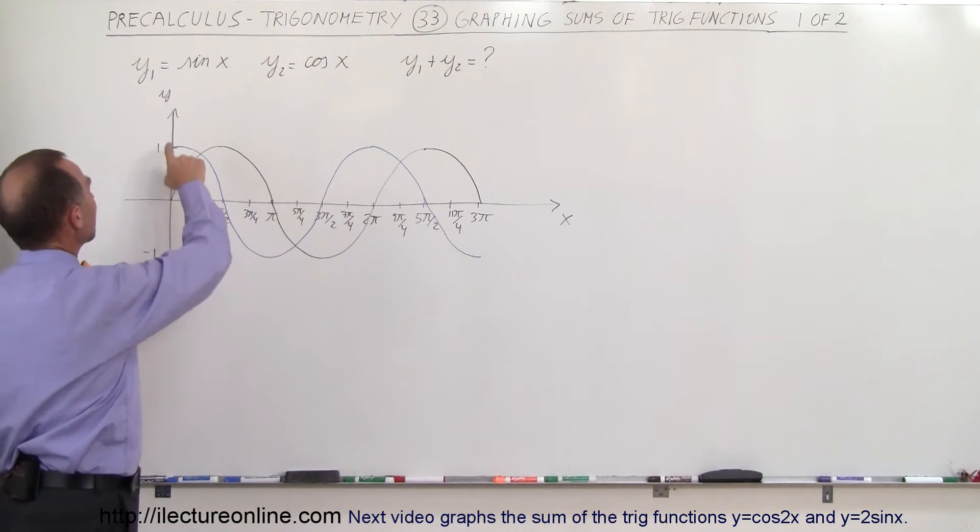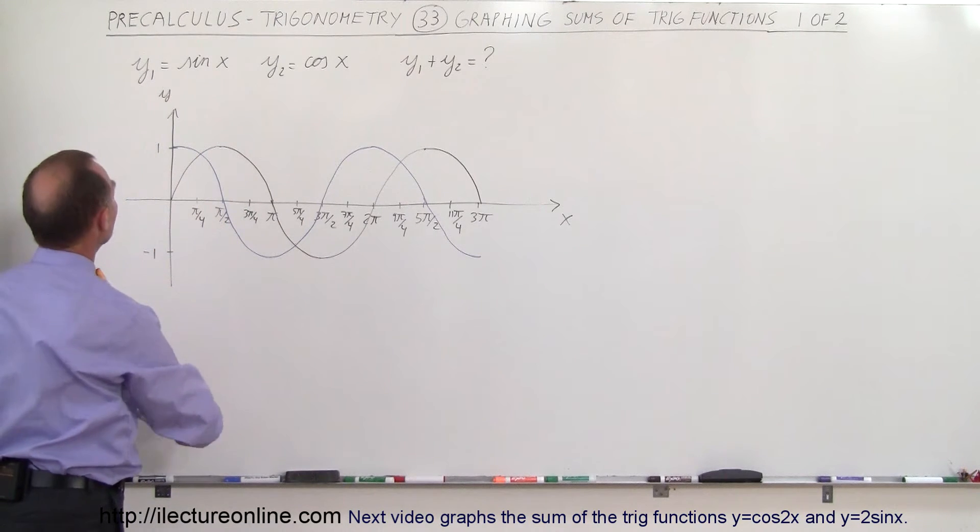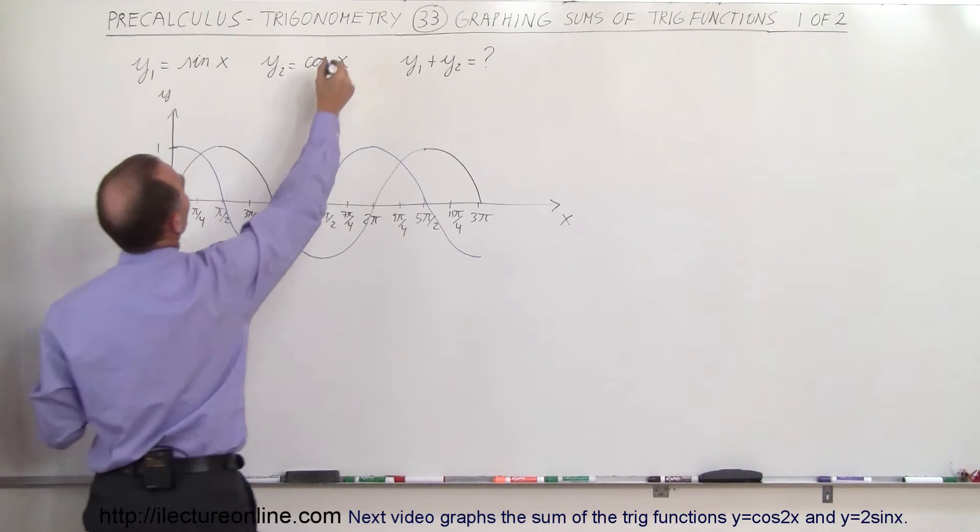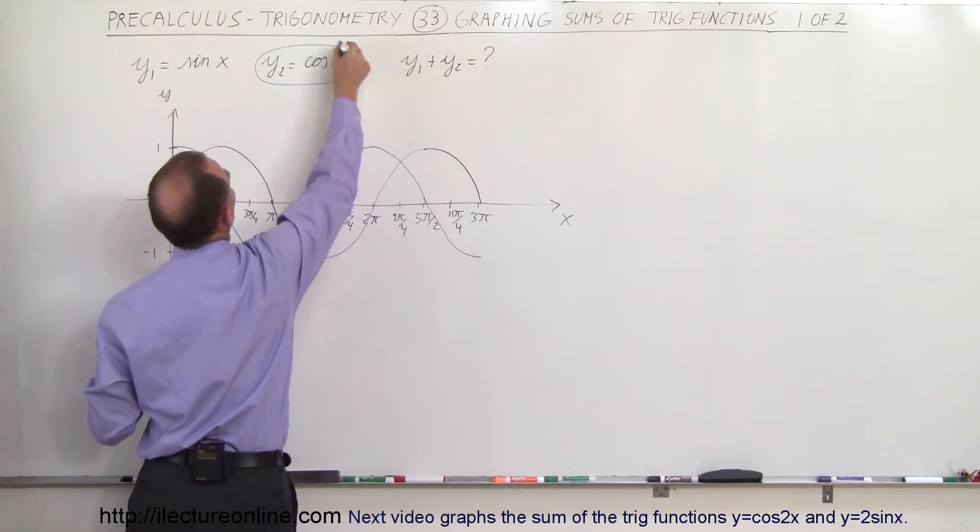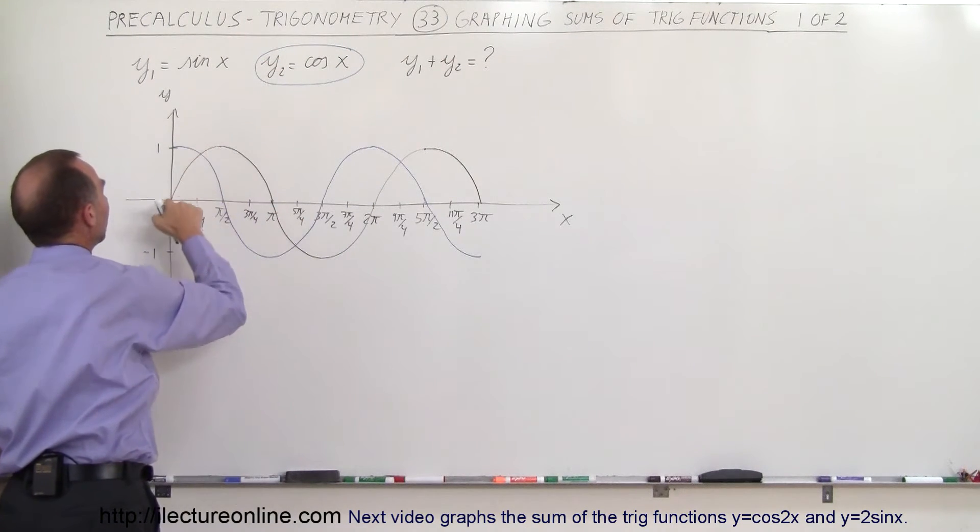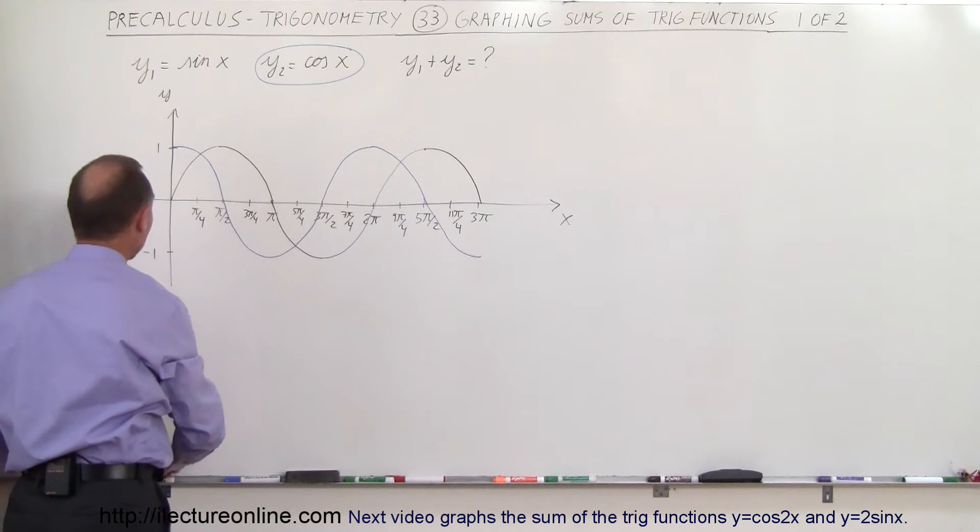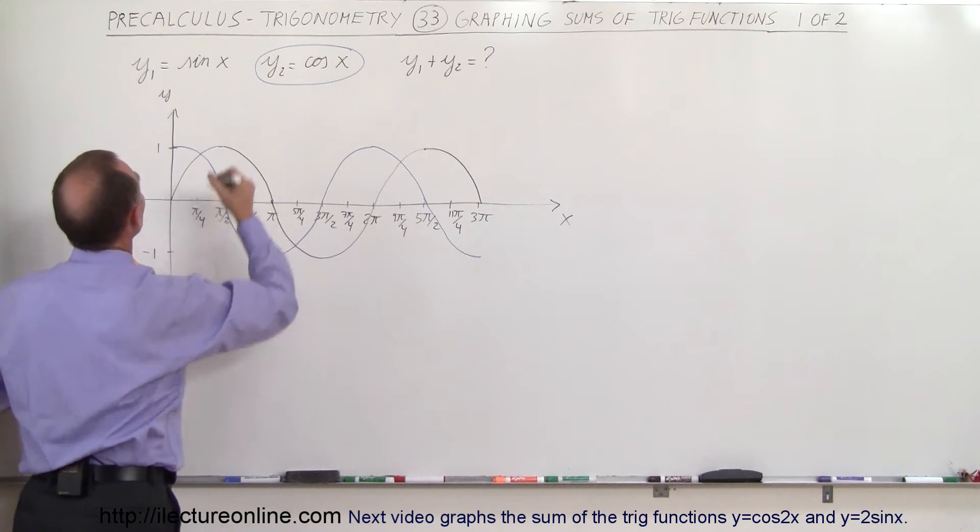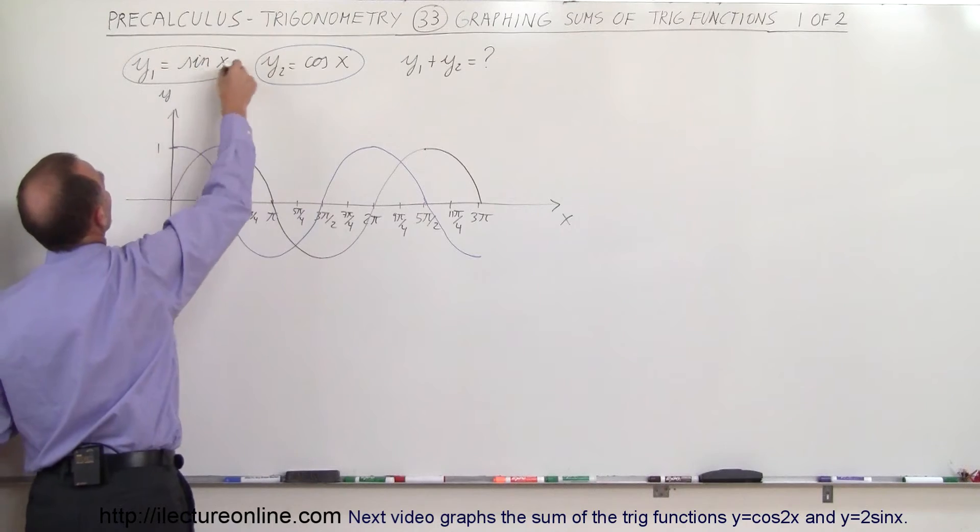And so now we have the first one drawn. The blue line represents the cosine of x, because it starts at 1 when the angle is 0. And the black line represents the sine of x.